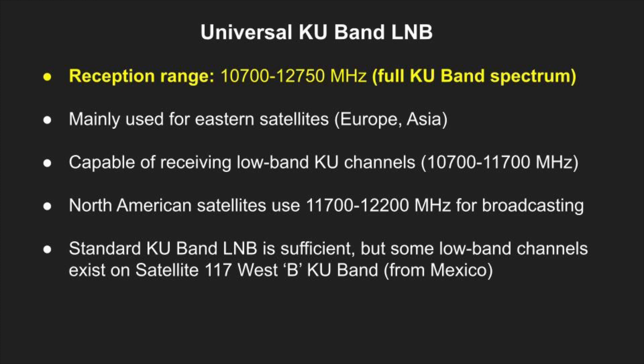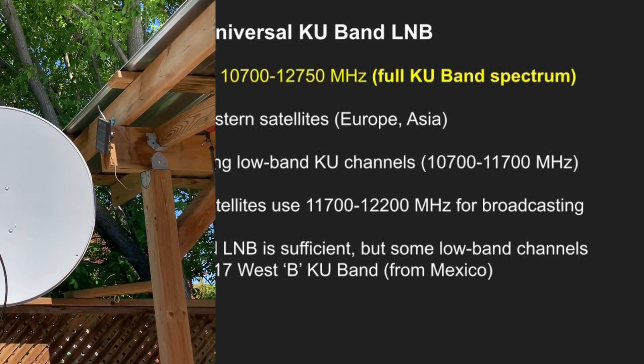The only exception to this is on satellite 117 West B, where there are a few channels from Mexico that broadcast on the lower part of the KU-band. If you want to receive those you need to use a universal LNB, but it's also important to remember that that satellite footprint only covers Mexico and part of the southern United States. I've tried to receive those with a universal KU LNB up here in Canada and have had no luck.